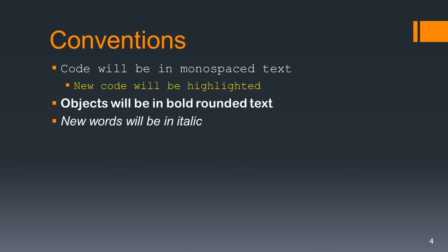The conventions, like in the other slideshows: code will be in monospace text, new code will be highlighted, objects will be in bold rounded text, and new words will be italicized.